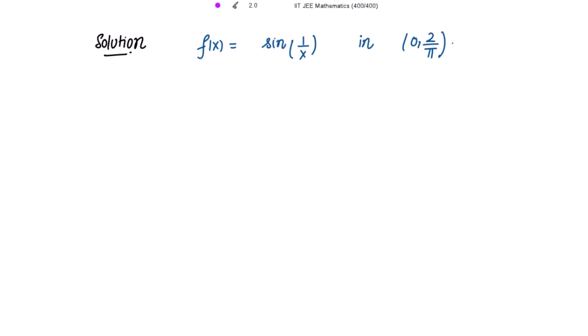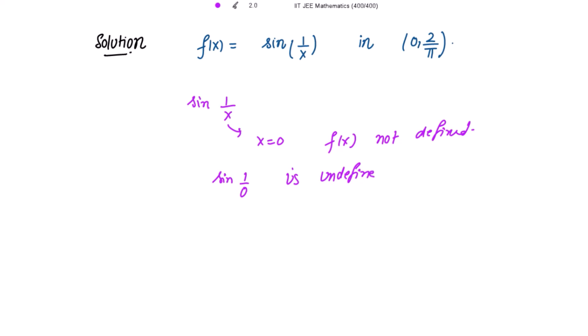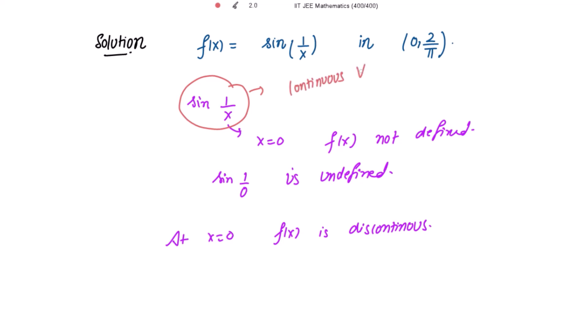The given function is sin(1/x). For continuity, we need to first check whether the function is defined or not. The function is not defined for x = 0 because sin(1/0) is undefined. That means at x = 0, the function is discontinuous. Now, sin(x) is always continuous on the real axis, which means this function sin(1/x) is continuous everywhere for all x except x = 0.